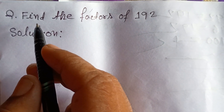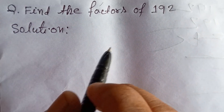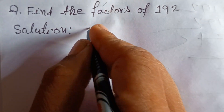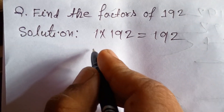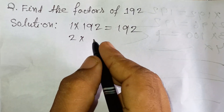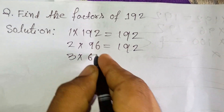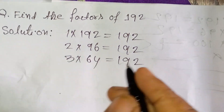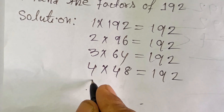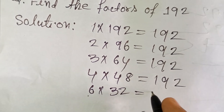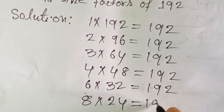Hello students. Today in this class, find the factors of 192. 1 × 192 = 192, 2 × 96 = 192, 3 × 64 = 192, 4 × 48 = 192, 6 × 32 = 192, 8 × 24 = 192.